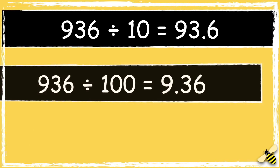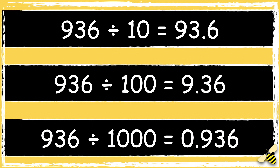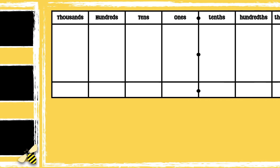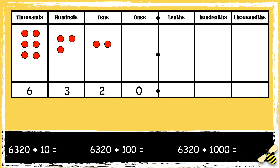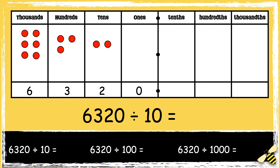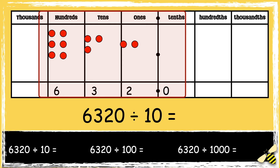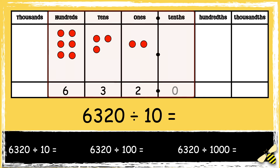So now we have divided a three-digit number by 10, 100, and 1000. Now let's have a look at a four-digit number divided by 10, 100, and 1000. Here is the number 6320. So let's divide it by 10 first. When we divide numbers by 10, the digits move one space to the right. So 6320 becomes 632.